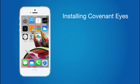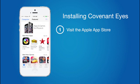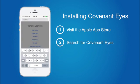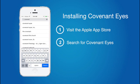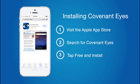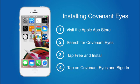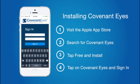The first step when installing Covenant Eyes is to visit the Apple App Store. This can be accessed by an app that comes already installed on your device. Once in the App Store, search for Covenant Eyes, tap on Free, and then Install. Once the app is downloaded, tap on it and sign in with your Covenant Eyes username and password.